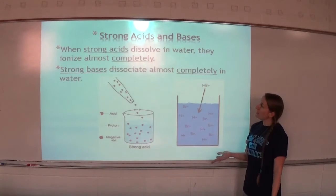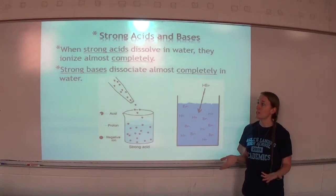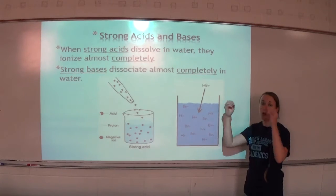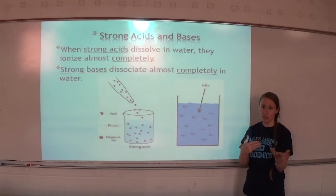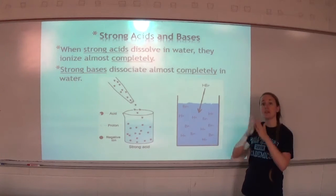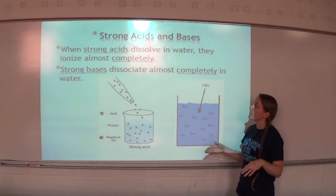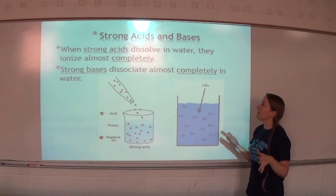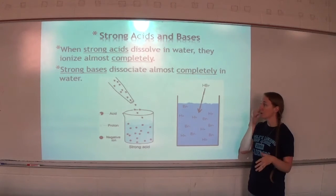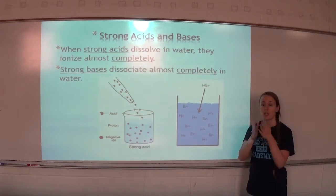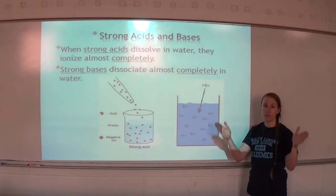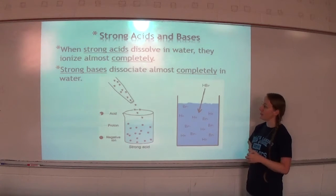When strong acids dissolve in water, they ionize almost completely. That means it breaks apart. So if I have HCl, the H and the Cl, almost every single one will break apart. Strong bases are the same way. They almost completely ionize in water. So if I have NaOH, almost every single one will break up into Na+ and OH-.